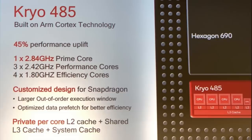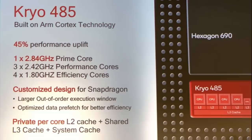The clocking speed is divided: 4 powerful cores split into 1 prime core at 2.84 GHz and 3 performance cores at 2.42 GHz. The next 4 power-efficient cores run at 1.80 GHz clocking speed.